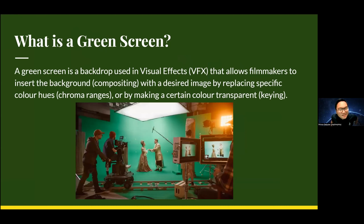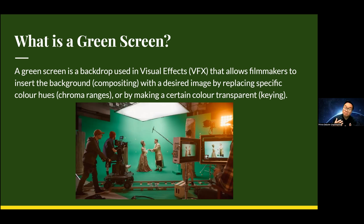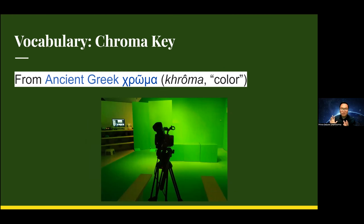So what is a green screen? Not just a screen that is green — it's a backdrop used in VFX or visual effects. It allows filmmakers to replace the background through a process called compositing or layering. They isolate that specific color, that hue or chroma range, and make it transparent via a process called keying. Key vocabulary: chroma key — from the Greek 'chroma' meaning color. Compositing means layering images on top of each other. Walt Disney's very first films composited a real human subject with animated characters, which was very revolutionary at the time.